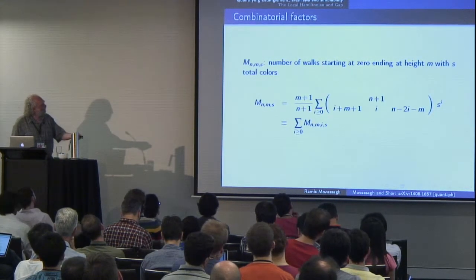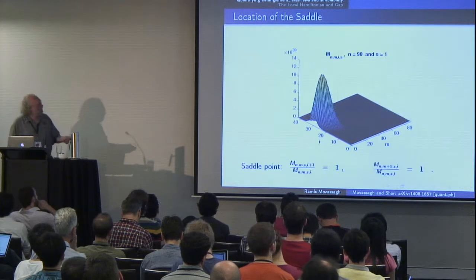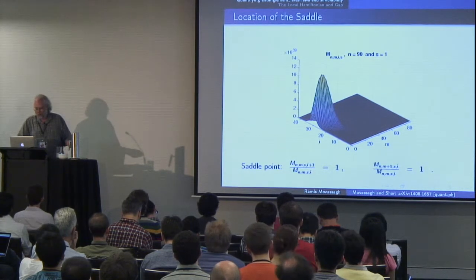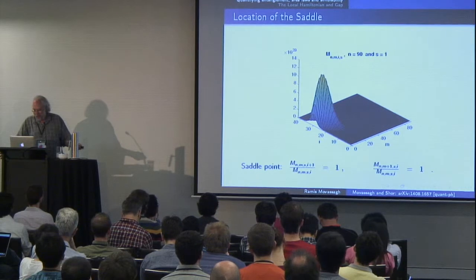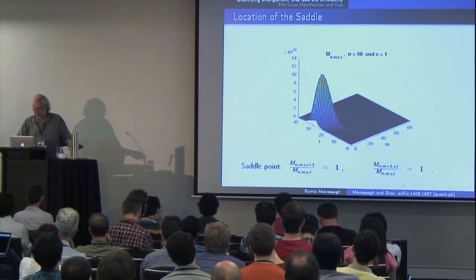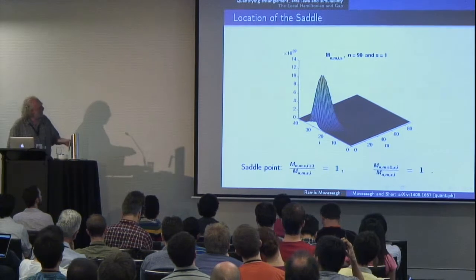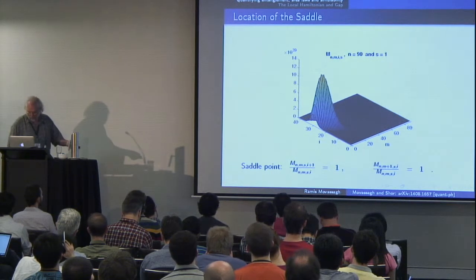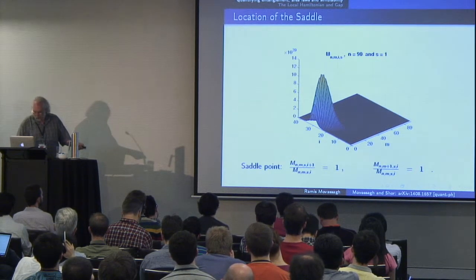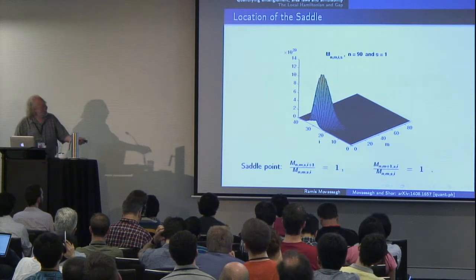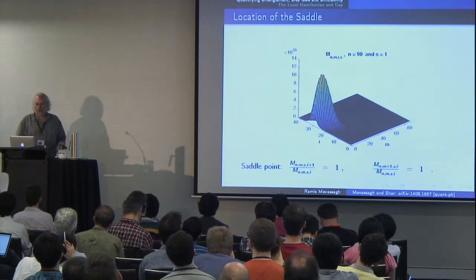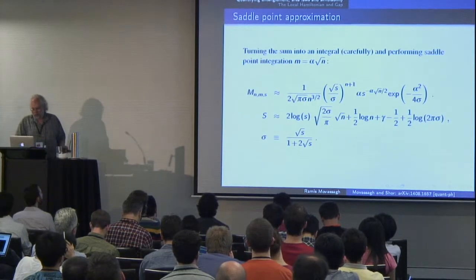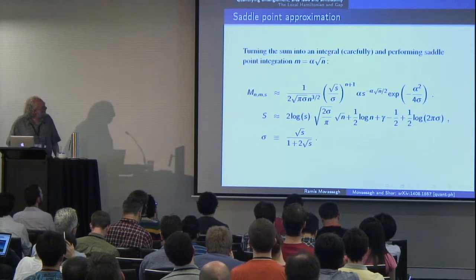These combinatorial quantities are highly concentrated — for a Motzkin walk of length n=90 with one type of parenthesis, the height m is fairly small, around √n. You can turn this formula into an integral, do saddle point integration, and extract asymptotic properties.